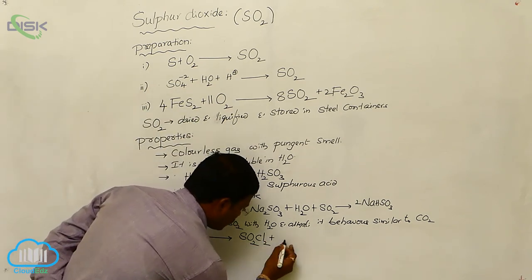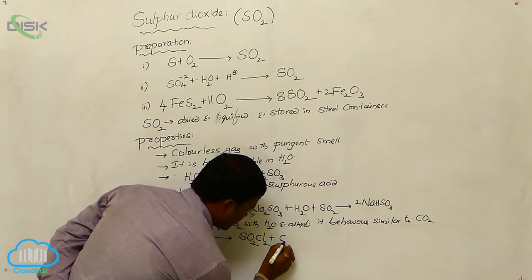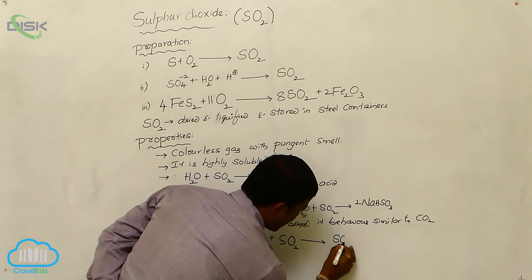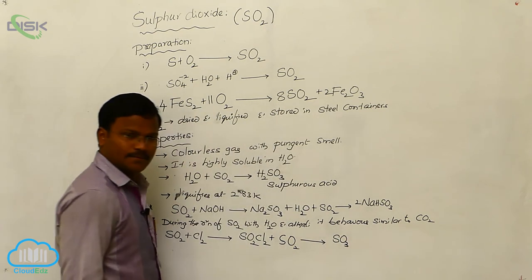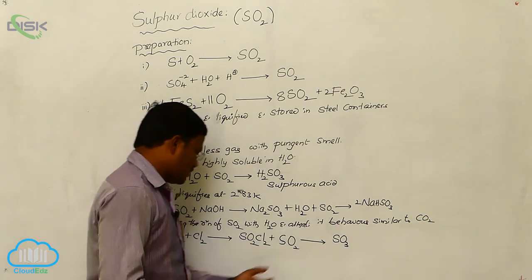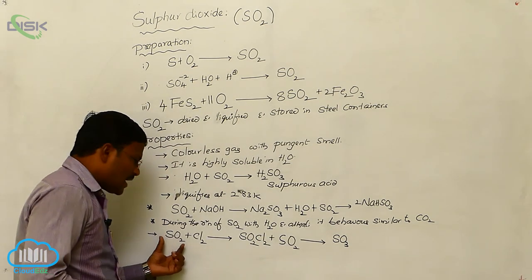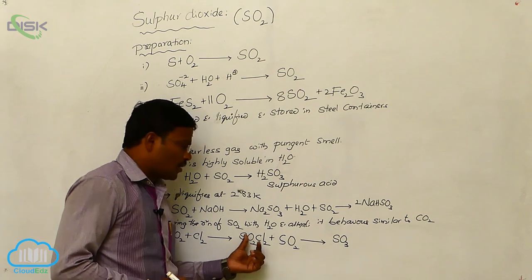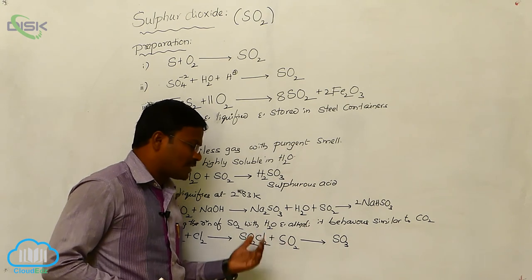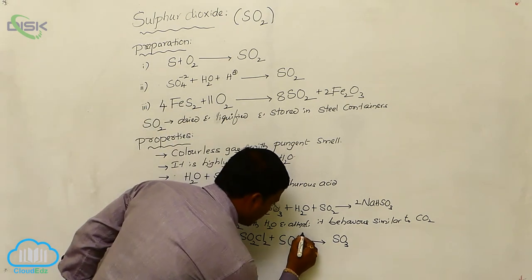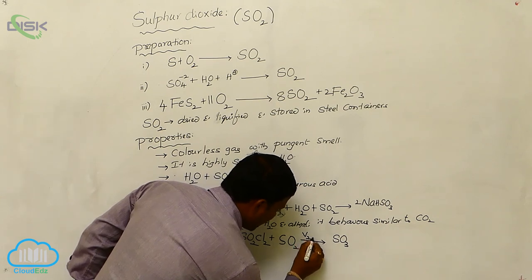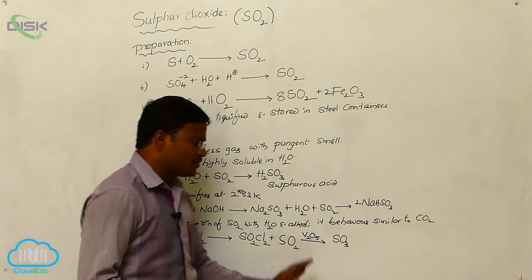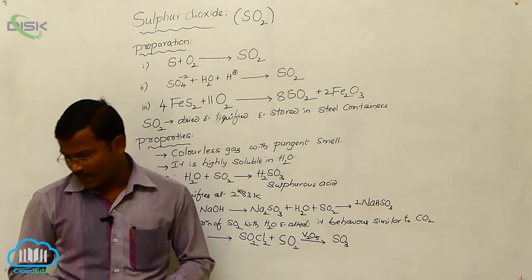The formed sulfuryl chloride, when further reacted with sulfur dioxide in the presence of vanadium pentoxide (V₂O₅) as catalyst, ultimately produces sulfur trioxide as the final product. Sulfur dioxide reacts with chlorine to produce sulfuryl chloride, which then reacts with one more sulfur dioxide in the presence of V₂O₅ catalyst to produce sulfur trioxide.